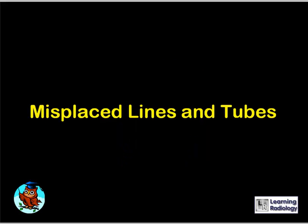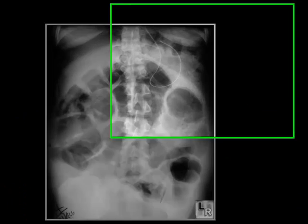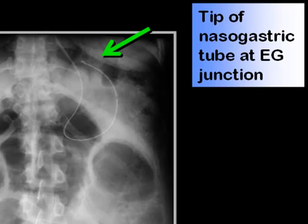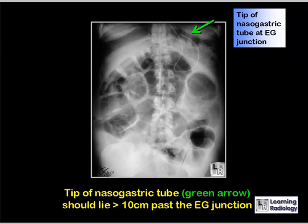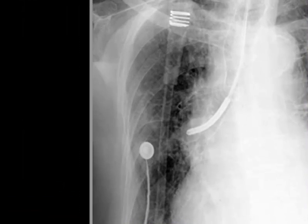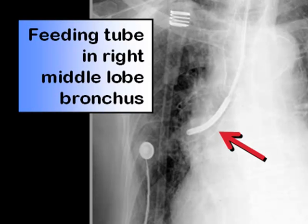These are a series of misplaced lines and tubes. What could be better about the placement of this nasogastric tube? The Dabhoff feeding tube is clearly not in the esophagus — it's in the right middle lobe bronchus.